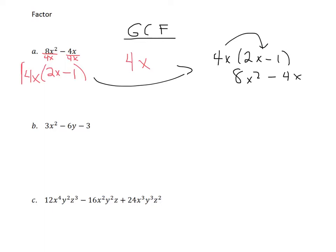So if it asks us to factor, this is as far as we need to go. Let's go down here and take a look at b. What is the GCF going to be? We have a 3, a negative 6, and a 3. The biggest factor we can take out is a 3. This one has an x but the other two don't, so we can't take an x out. This one has a y but the other two don't, so we can't take a y out. So the GCF for this one is just the number 3.